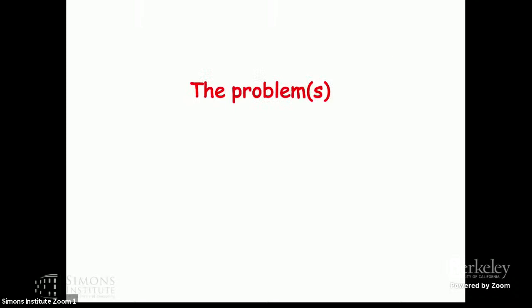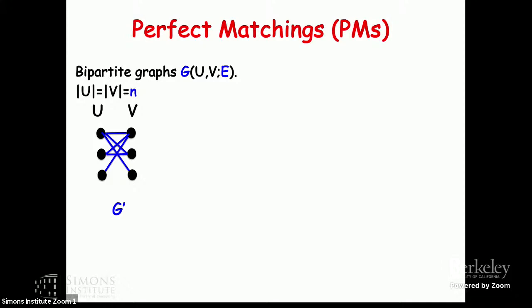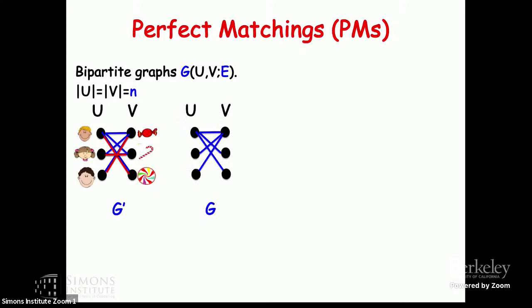To discuss this algebraic problem, I'll start from a simpler baby case problem which you all know. The baby case problem is bipartite matching — we have a graph, and the question is whether we can match them up. In this particular graph it is possible, and in this other one it is impossible. So some graphs have a perfect matching and some don't.